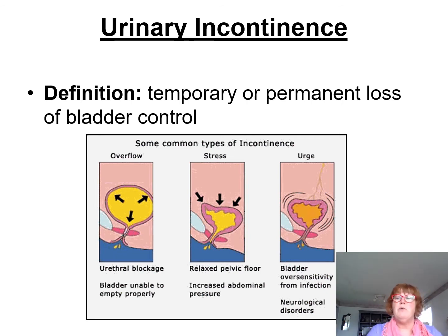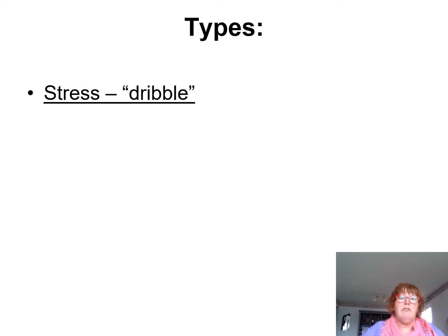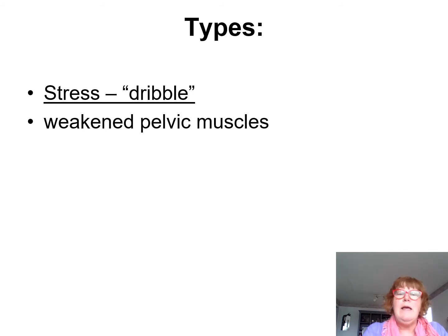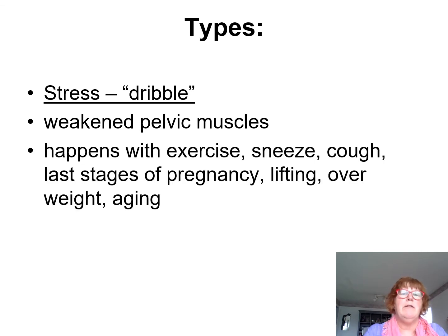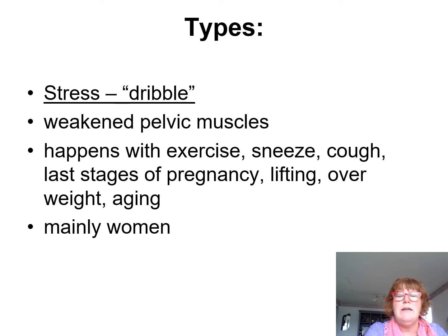Stress incontinence is like a dribble — it's caused by weakened pelvic muscles, and if you've been pregnant, pressure on the top of your belly can cause it. It happens when you exercise, sneeze, cough, in the later stages of pregnancy, when lifting, or with aging. It mainly affects women, though it can happen in males, and it is a dribble — less than 50 cc.